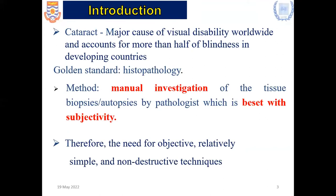In clinical experiments, the gold standard of evaluating and discriminating cataractous lens from healthy lens is histopathology. However, histopathology has been found to be very subjective. Therefore, there is a need for an objective technique that is also non-destructive to discriminate cataractous lenses from healthy lenses.